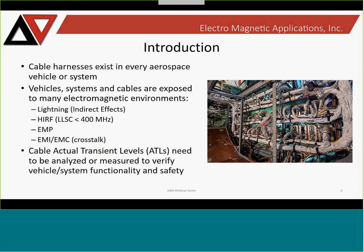Cable harnesses exist in every aerospace vehicle or system. They can be quite complex and often occur late in the design, implemented as one of the last aspects of a particular vehicle. These vehicles are exposed to a multitude of environments including lightning — specifically indirect effects — as well as HIRF environments with low-level coupling to cables, and EMI/EMC environments that you have to evaluate your system for. When looking at cables, you want to understand the actual transient levels — what currents and voltages will couple to your cables and electronic systems — to verify vehicle functionality and safety.